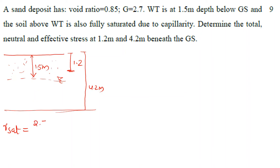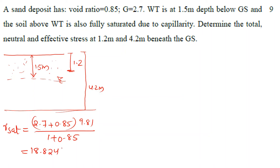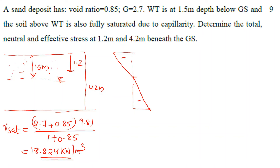We calculate gamma saturated using the formula: (G plus e) into gamma_w divided by (1 plus e), giving 9.81 with the given e value, resulting in gamma_sat equals 18.284 kN/m³. Above the water table, due to capillarity, the pore pressure is negative. Below the water table it is positive.